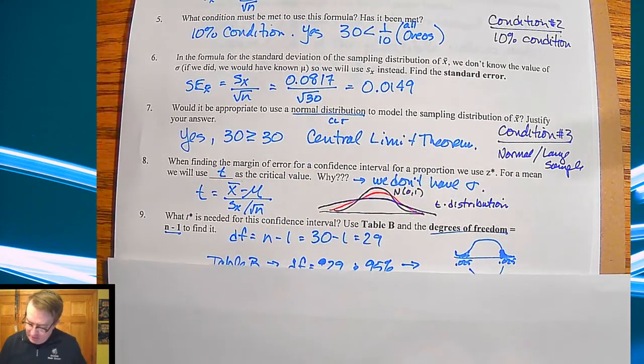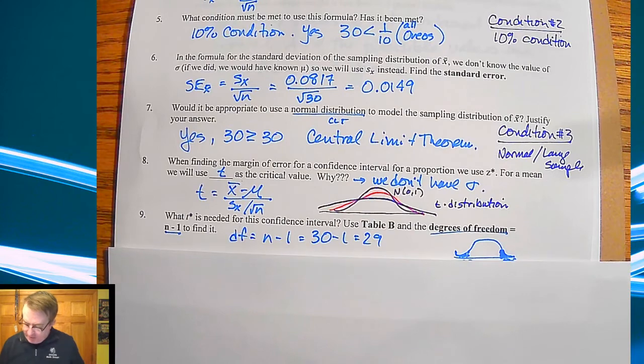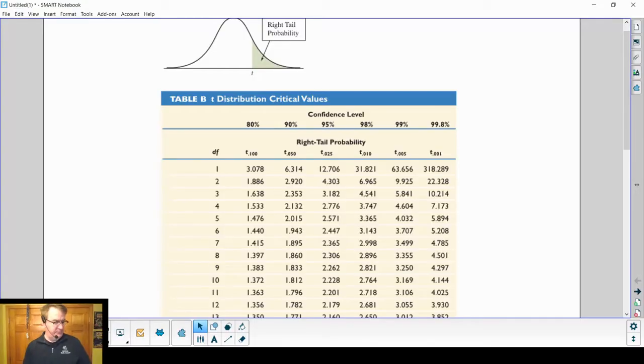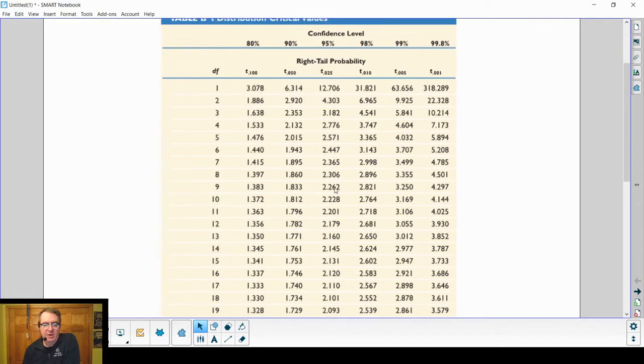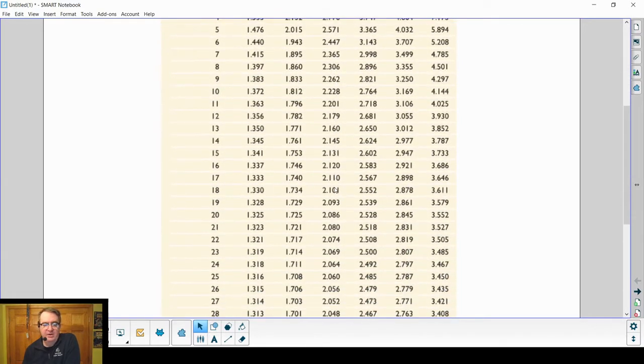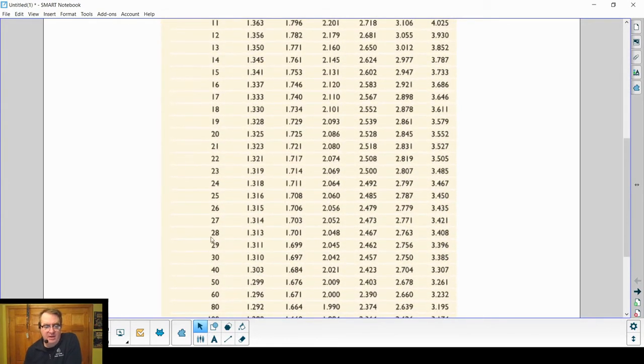All right so anyway for table b what you're going to do for 95 percent is we come back here. So for 95 percent confidence interval it is here. Why? Because this right tail probability is going to be 2.5 or yeah 2.5 percent 2.5 percent on the other side. So I'm going to scroll down until I see 29. And we get down here and we get to 29 and 2.045.